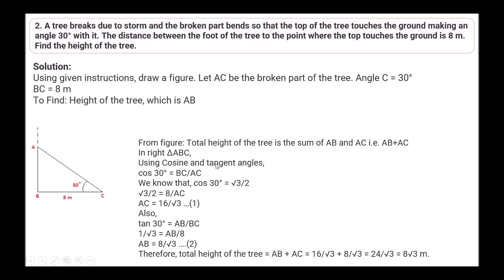In right triangle ABC, using cosine and tangent: cos 30° = √3/2, so √3/2 = 8/AC, giving AC = 16/√3 (equation 1). Also tan 30° = AB/BC, so 1/√3 = AB/8, giving AB = 8/√3 (equation 2). Total height = AB + AC = 16/√3 + 8/√3 = 24/√3 = 8√3 meters.